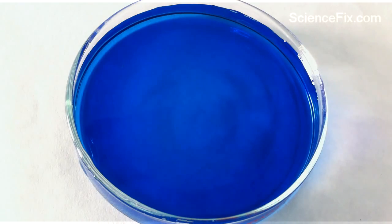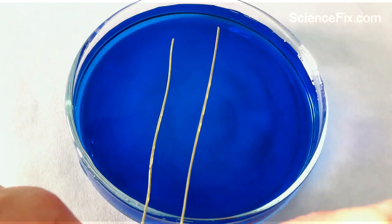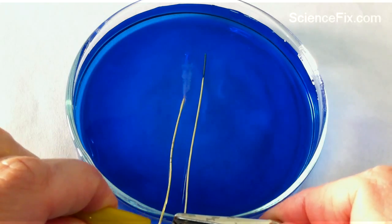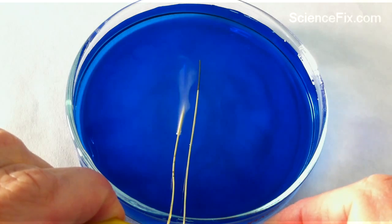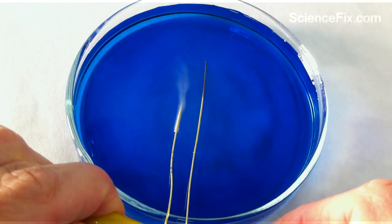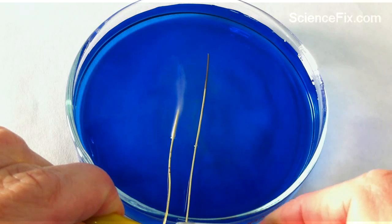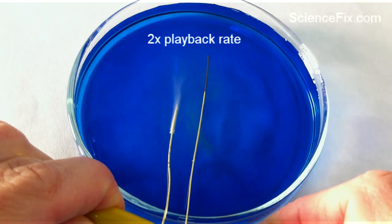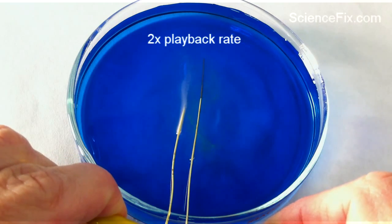Then you put the two wires into a solution of bromethymol blue, and the bromethymol blue solution also has some salt so you can get the electricity flowing through the water much easier. You can see electricity is flowing between the two wires and you have bubbles forming - that's the oxygen and hydrogen gas forming.